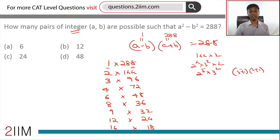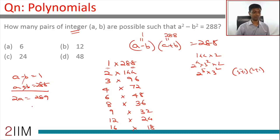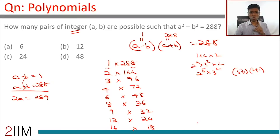Here's the key parity constraint: if the sum of two numbers is even, the difference is also even; if the sum is odd, the difference is also odd. So if a minus b is 1 and a plus b is 288, adding gives 2a = 289, meaning a = 289/2, which is not an integer. Therefore, a minus b and a plus b must both be even or both be odd — and both cannot be odd here, so we need both even. This eliminates 1×288, 3×96, and 9×32.